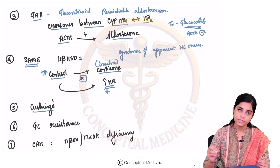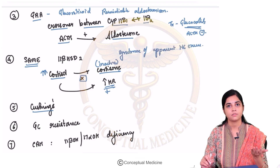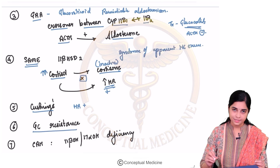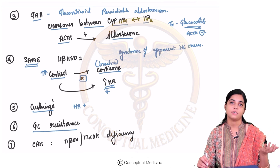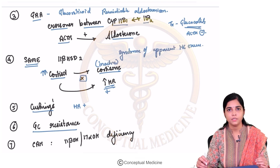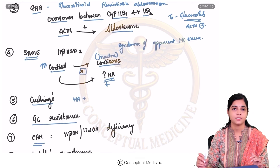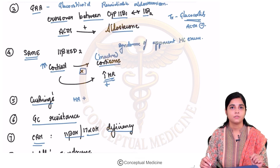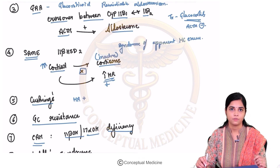In Cushing's syndrome, excess cortisol can cause activation of the mineralocorticoid receptor. Glucocorticoid resistant syndrome is a rare syndrome where there is resistance to glucocorticoids, so excess glucocorticoids cause stimulation of excess mineralocorticoid via mineralocorticoid receptor activation. In congenital adrenal hyperplasia, 11-beta and 17-alpha hydroxylase deficiency is associated with mineralocorticoid excess.